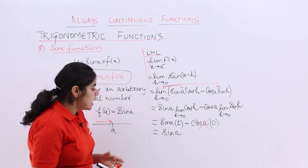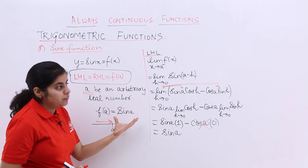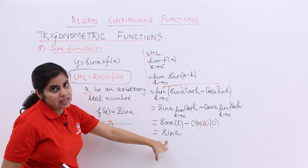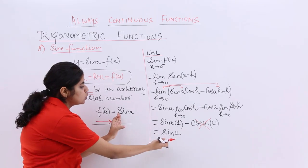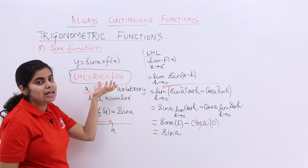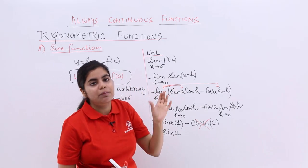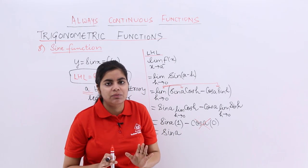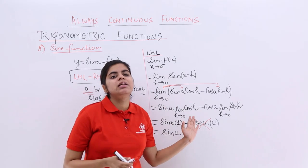So that means f of a was sine a. LHL was sine a. These two are equal. If RHL also is sine a, my function is continuous. We are basically proving sine to be continuous. We know it already, but still we are proving, right?